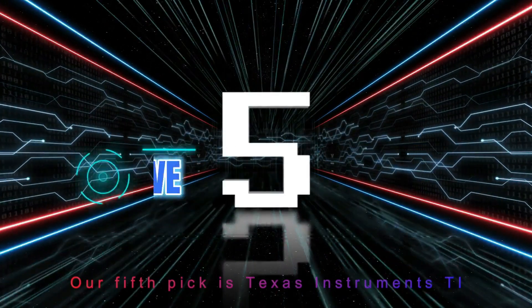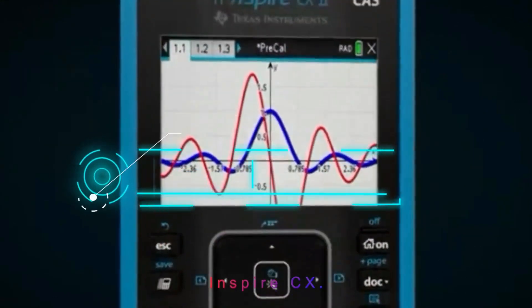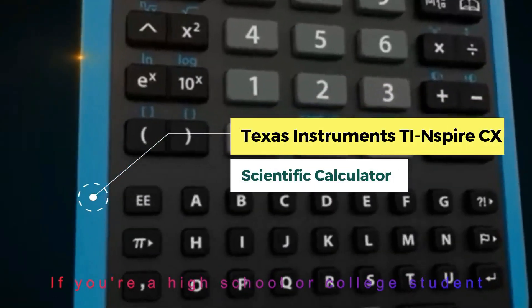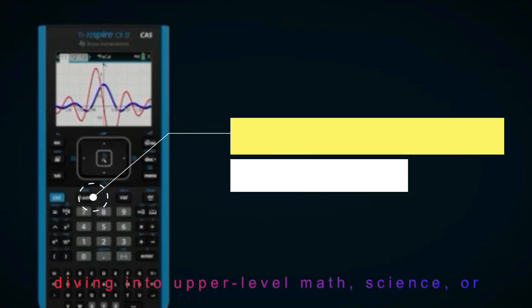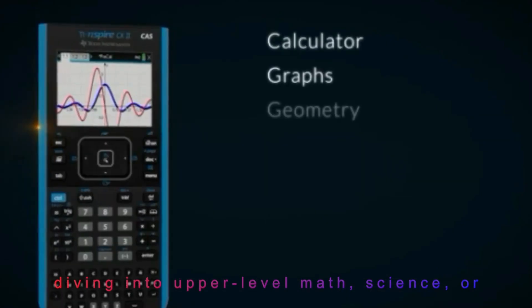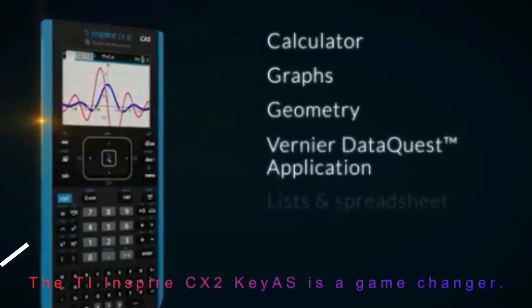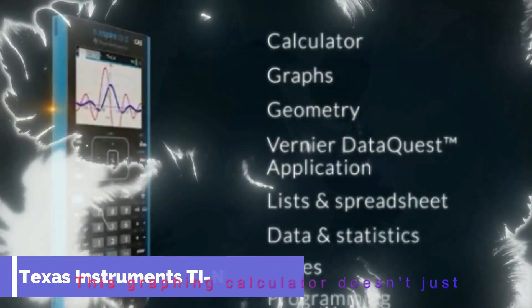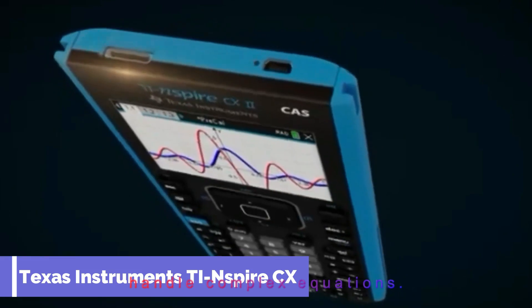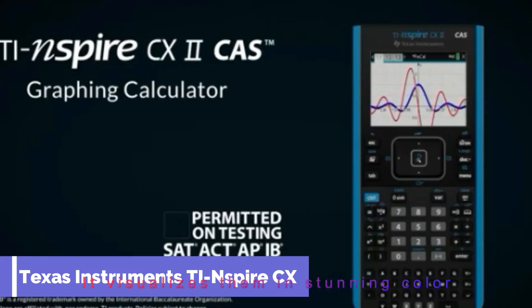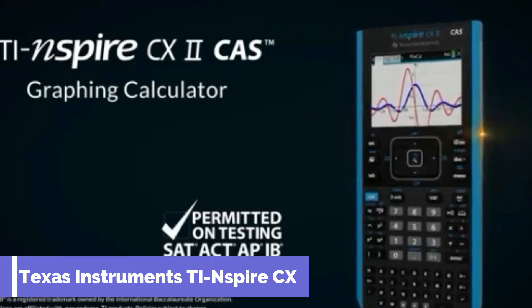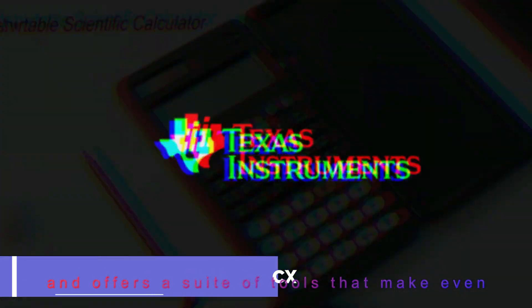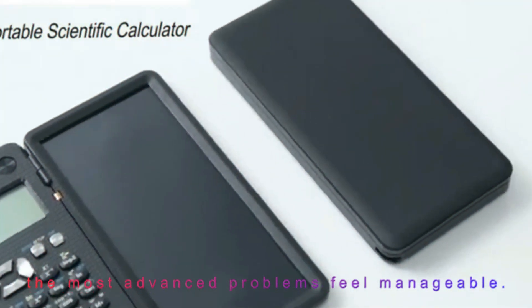Our fifth pick is Texas Instruments TI-Inspire CX. If you're a high school or college student diving into upper-level math, science, or engineering, the TI-Inspire CX-2KS is a game-changer. This graphing calculator doesn't just handle complex equations, it visualizes them in stunning color, and offers a suite of tools that make even the most advanced problems feel manageable.